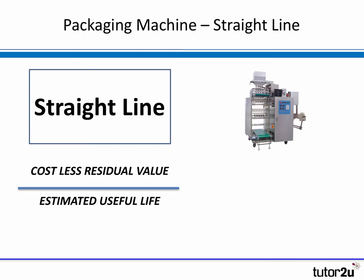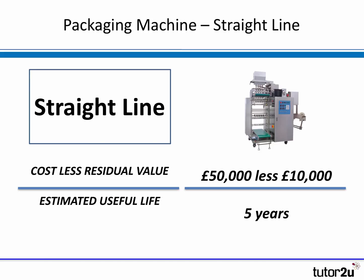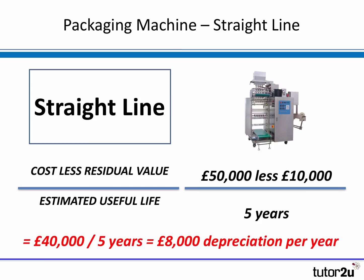Let's look first at the straight-line depreciation method. Remember: it's cost less residual value, divided by the estimated useful life in years, to give the annual depreciation charge. For the packaging machine, it's fifty thousand pounds cost less ten thousand pounds residual value, divided by five years of useful life. Fifty less ten is forty thousand, divided by five years, gives us eight thousand pounds per year. That eight thousand pounds will be the depreciation cost in the income statement each year for that asset.